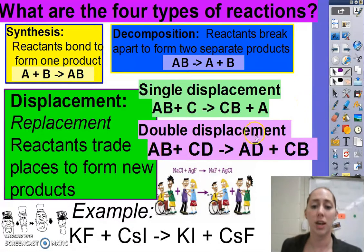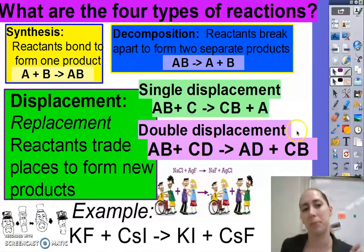And then our fourth type is our double displacement. This is where you've got two compounds, and they rearrange to form two new compounds. So you've got two different couples. They rearrange to form two new couples.